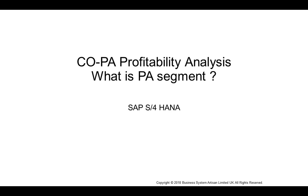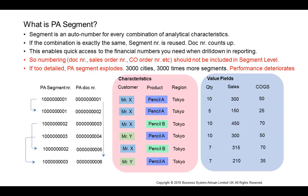Hi, I'd like to explain what a PA segment is. A PA segment is a combination of analytical characteristics, for example, customer, or product, or the region, geographical location of the customer, or the organization unit, like sales division or profit center. The combination of these analytical characteristics is called a PA segment.